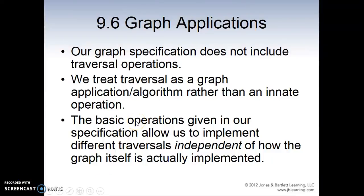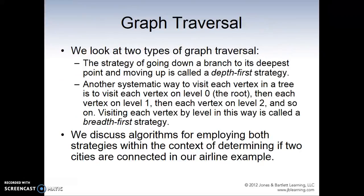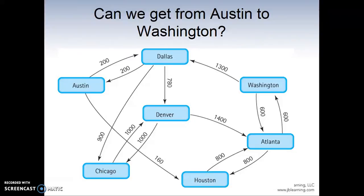So, graph applications. We already understand what graph we have known. We want to apply the application on this graph here. For example, we try to travel from Austin to Washington. Like in our assignments, we try to travel from our location — this could be your zip code — to the hospital location, which is another zip code. So we can name one zip code as Austin and another zip code as Washington.